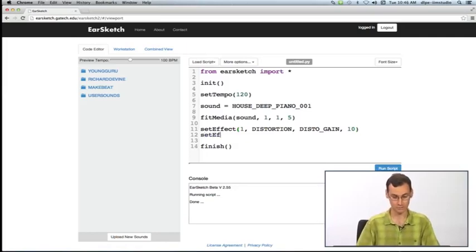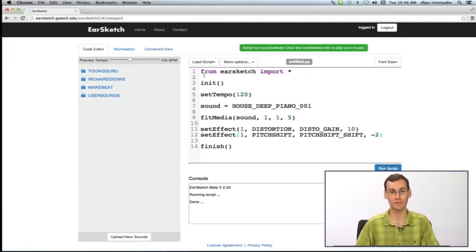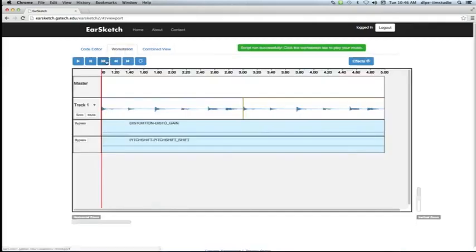Now I want to stack another effect on here. I want to do pitch shift. So I'll add pitch shift, and the parameter I want to change is PITCHSHIFT_SHIFT. That will take this down by a whole step, negative two semitones. Run that again, and you should hear that it's a different pitch than it was before.